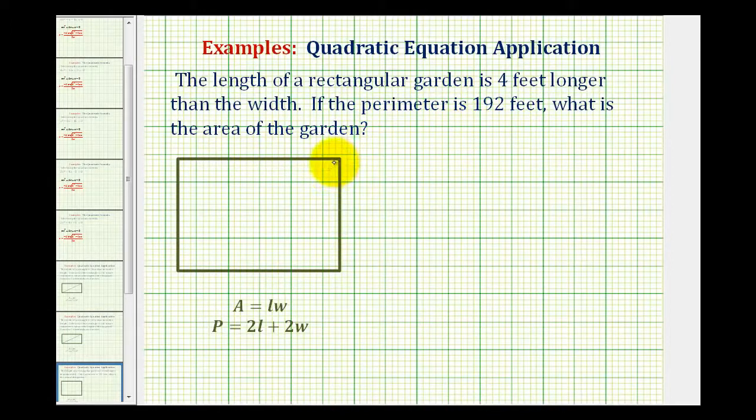Because the length is four feet longer than the width, if we let the width equal x, then the length would be x plus four to represent four feet longer. And opposite sides of a rectangle are equal in length.